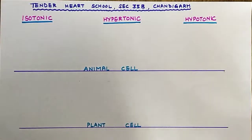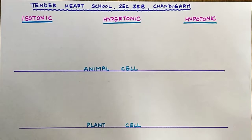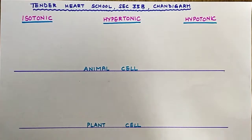Good morning students. Today we will discuss and draw the fate of an animal cell and a plant cell when placed in three different kinds of solutions: isotonic, hypotonic, and hypertonic solution.